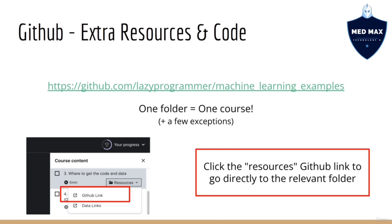Aside from just notebooks, there is yet another place to get extra resources for this course — for example, reading materials, data processing scripts, and other miscellaneous things. To get these, please go to my GitHub repo: github.com/lazyprogrammer/machinelearningexamples. This contains materials for all my courses in a single repo, organized by folder — essentially one folder per course, although there are some exceptions. To go directly to the folder for this course, please click the resources link attached to this lecture.